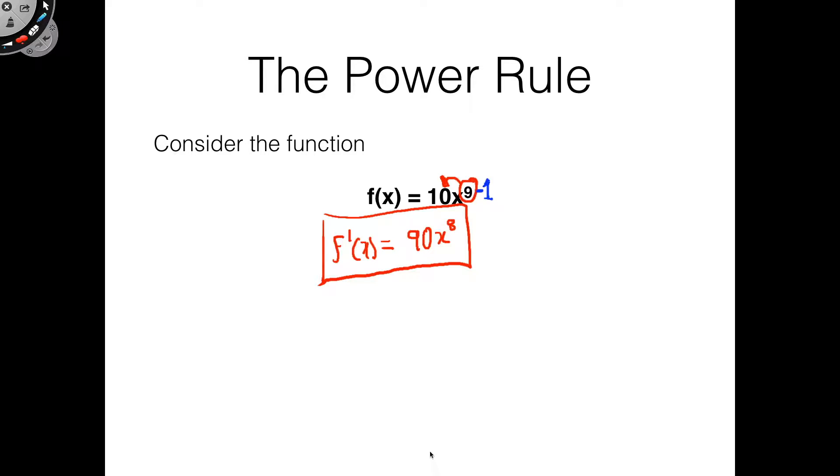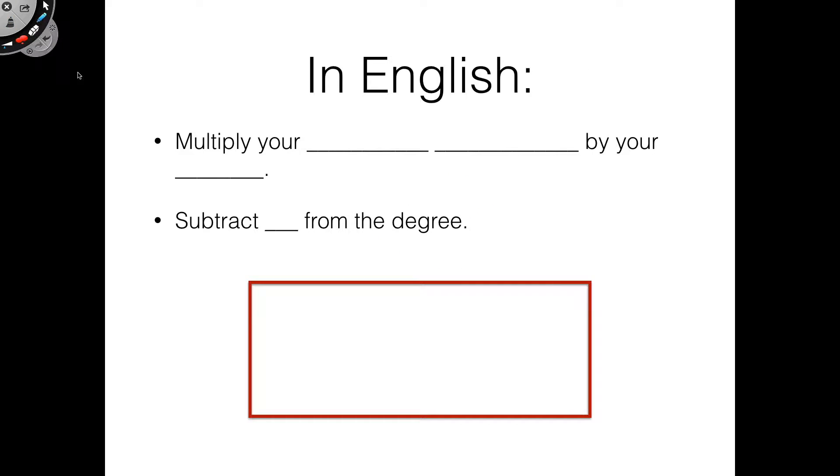Now let's just go ahead and take a minute to put that all in words. To calculate a derivative using the power rule, you multiply your leading coefficient by your degree. Okay, so once you've done that, you subtract 1 from the degree.